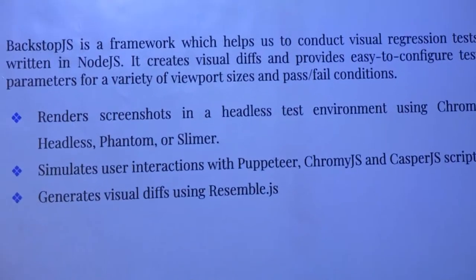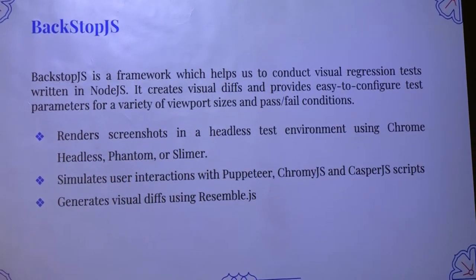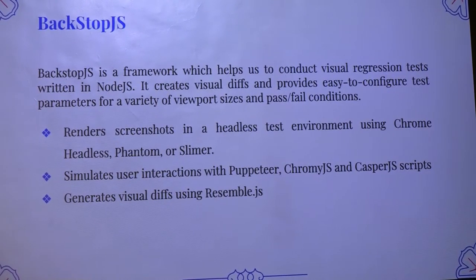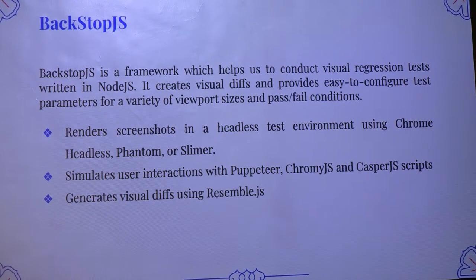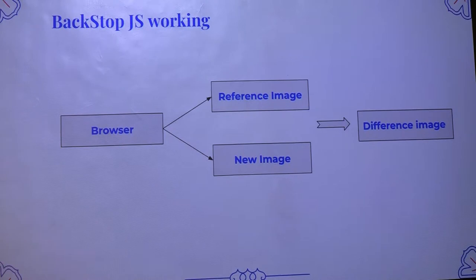Backstop.js is a framework used for visual regression. It basically works like this: it captures a reference image which we save as a baseline image. Then whenever we want to test a site, we run a command which captures a test image. At that same moment it compares both images — test image with reference image — and if there is any difference, it creates a diff image. That is how it works.